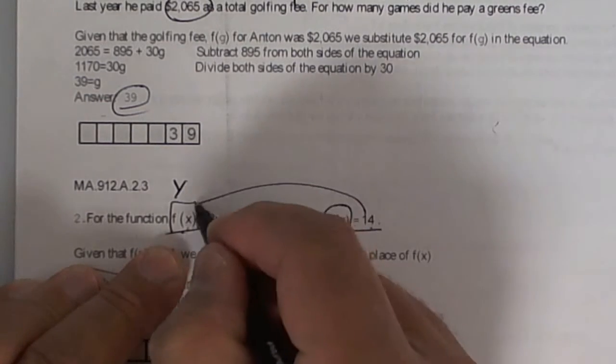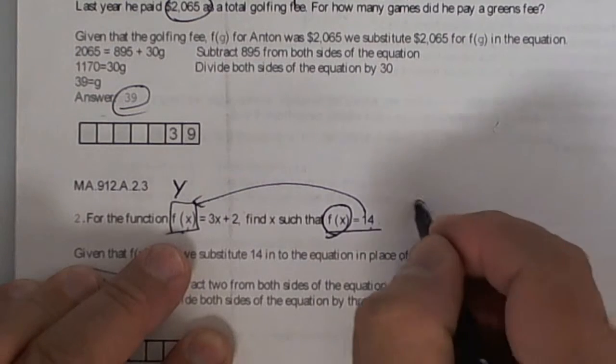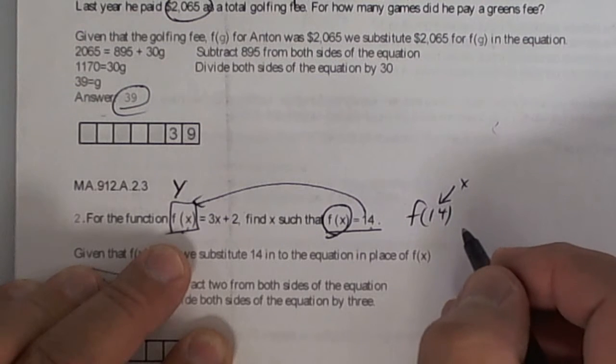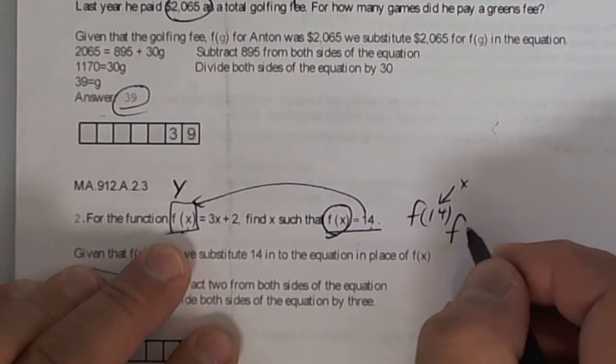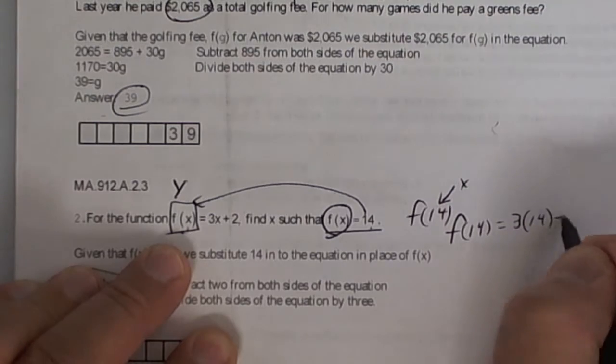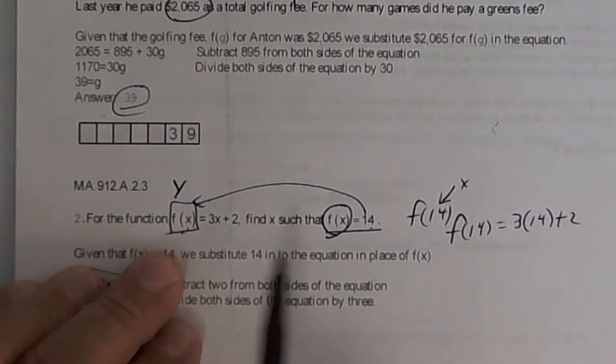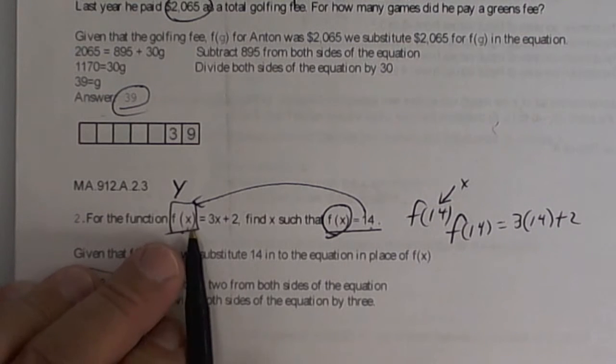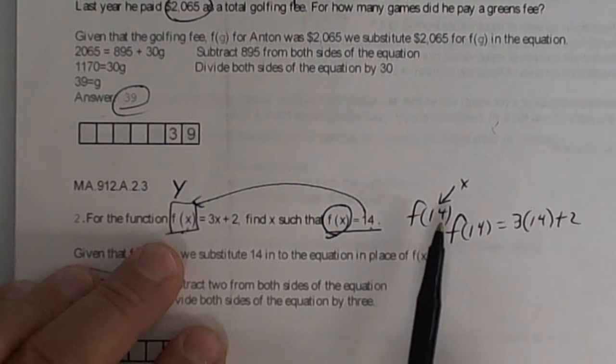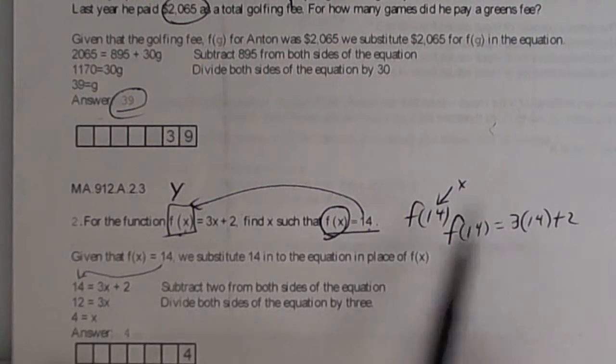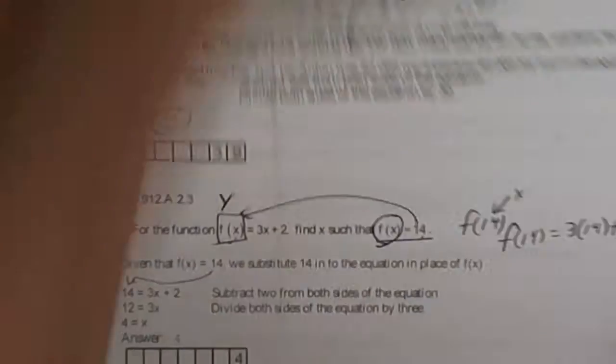Now keep in mind that if they tell you f(x) is equal to 14, then in place of the whole f(x) is 14. However, if they say f(14), that's the x value. So for that one you would say f(14) is equal to 3 times 14 plus 2. In this one you substitute the whole 14 for the f(x). In this one it's telling you that x is equal to 14, so you substitute the 14 right here. You multiply and then add 2. So that's a little different. So be careful with that. Memorize what I'm telling you on that.